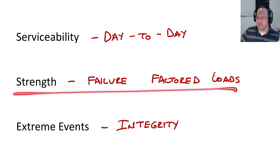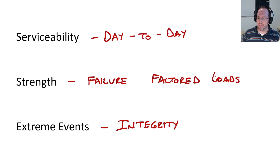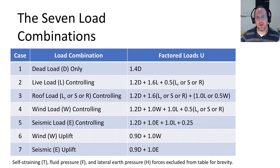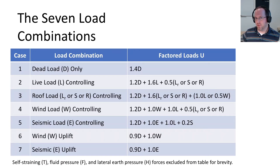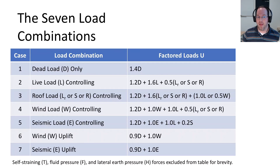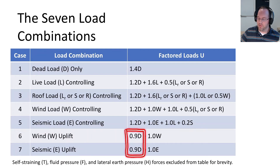So let's revisit the strength case. What are these factored loads? Factored loads can come in a variety of combinations, and we don't just put all the loads possible on a structure at the same time. We have something called seven deadly load combinations that we can consider for strength design. Each of these load combinations has a particular load that will be controlling — for example, dead load controlling, live load controlling, roof load controlling (which could be roof live load, snow load, or rain load), wind, and seismic. Then there are two special cases for uplift, where we actually minimize the amount of self-weight to get the most risk for overturning or uplift of our structure.